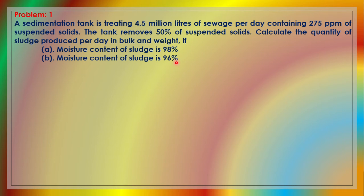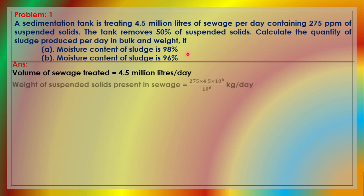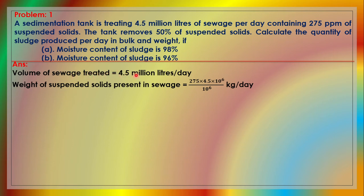The sedimentation tank has a suspended solids concentration of 275 ppm and the quantity of sewage to be treated is 4.5 million liters. In the primary sedimentation tank, 50% of suspended solids are removed. We need to find the sludge produced in bulk and weight.